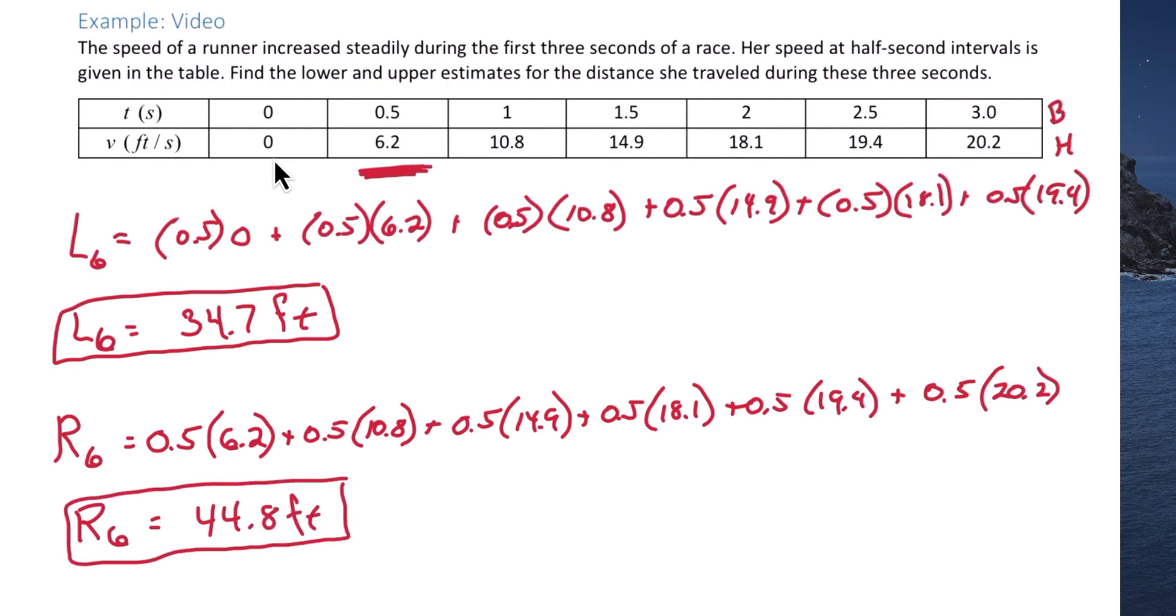So notice, we're getting different values. The left-hand is an underestimate. The right-hand endpoints are an overestimate.